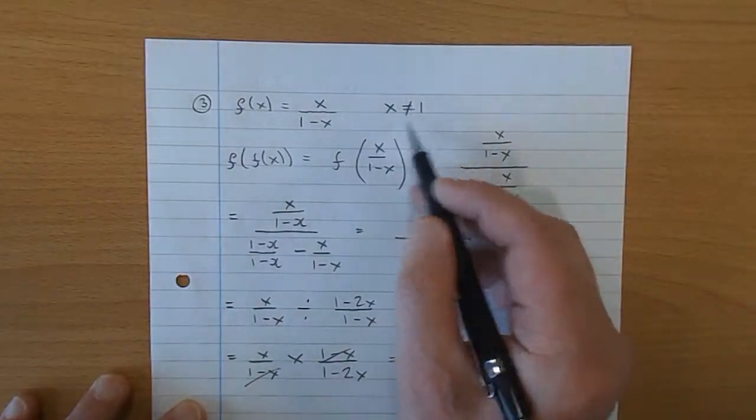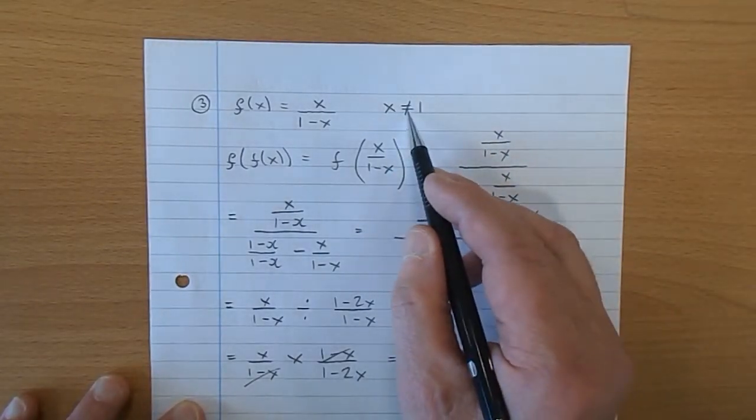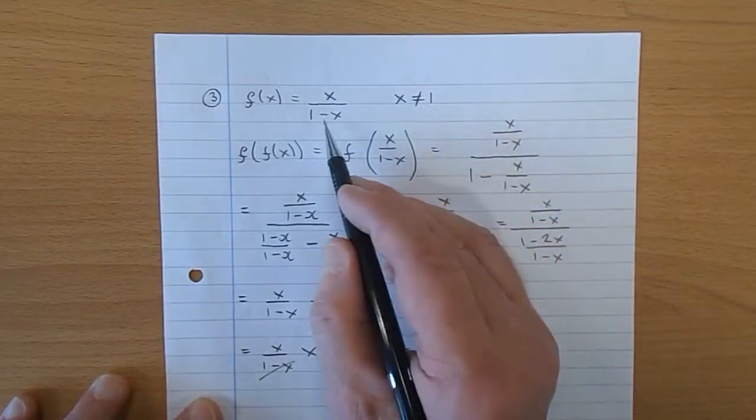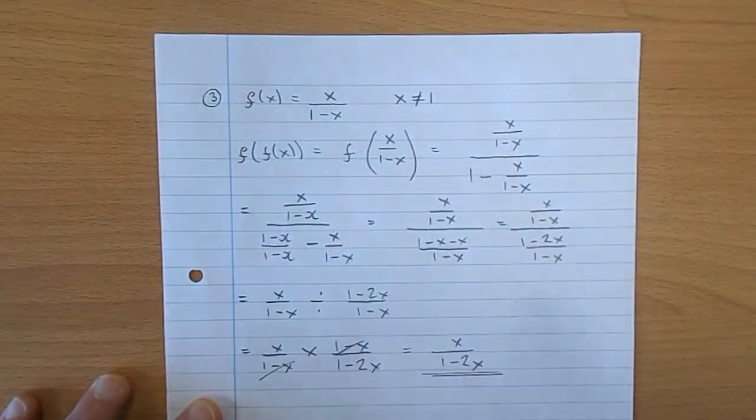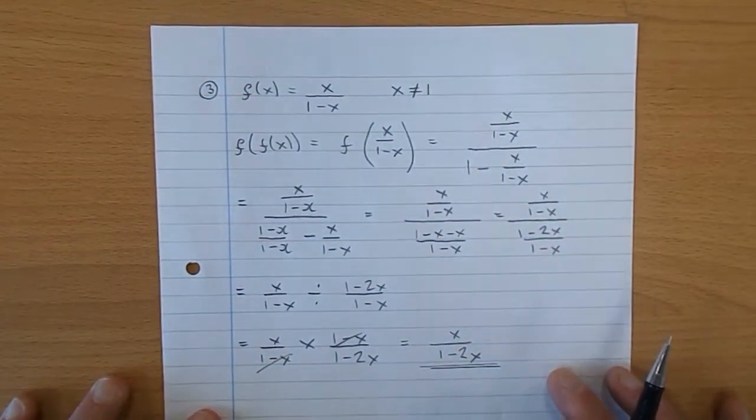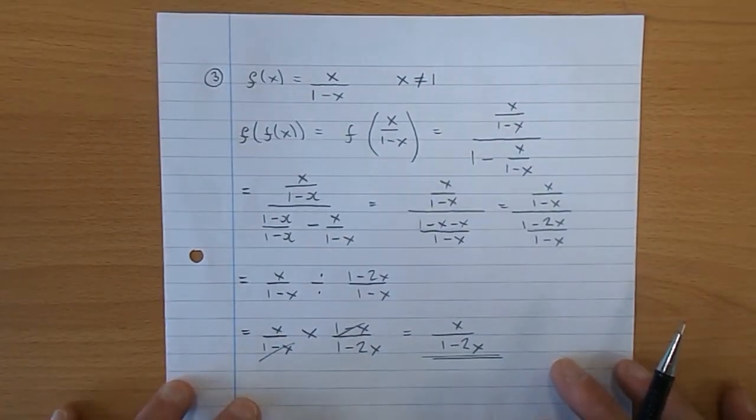And you have this here, not really part of the sum, they're just pointing out that x is not allowed to be 1 because that would give you 1 take 1, that would give you 0 in the bottom. So they're just pointing out that x can't be 1. But apart from that, you can just ignore that.